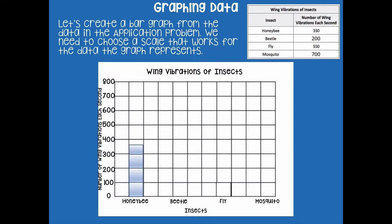Pause the video and add in the rest of the data for the bar graphs — the honeybee, beetle, fly, and mosquito — then click play when ready. Here's what I came up with: beetle, fly, and mosquito bars are complete. Make sure your graph matches mine. Notice that 550 also required going halfway between marks to represent that extra 50.